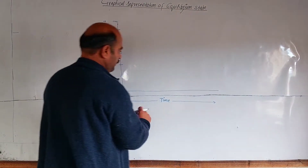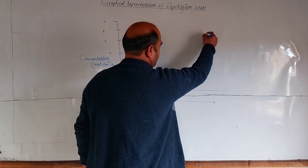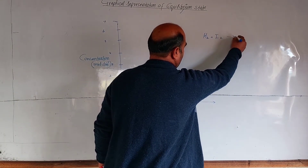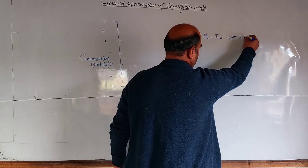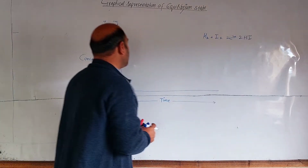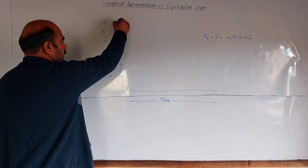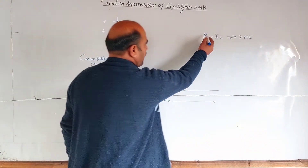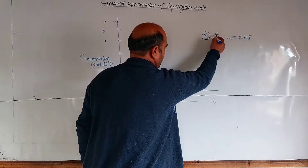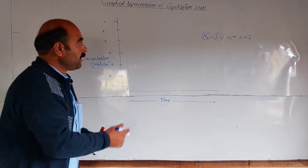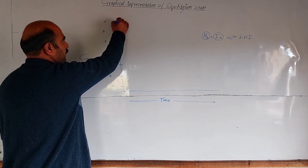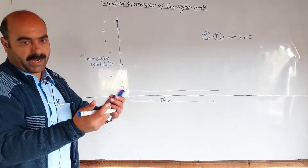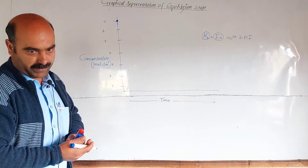The reaction shown is: hydrogen plus iodine forms hydrogen iodide, equilibrium with coefficient 2. Initially, the concentration of reactants is 7 moles per decimetre cube, and the concentration of hydrogen equals the concentration of iodine at the start.